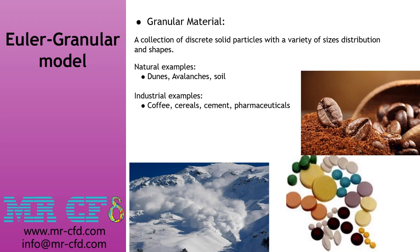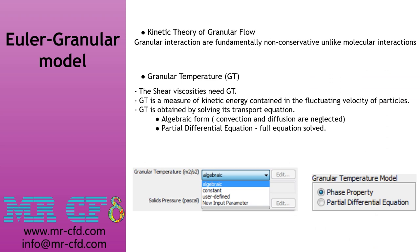Granular flows are among the most important mixture flows that can be simulated using the Eulerian model. Granular materials are collections of discrete solid particles with various sizes, distributions, and shapes — examples include natural phenomena like dunes and avalanches, and industrial applications like coffee, cereals, cement, and pharmaceuticals. The granular model, based on kinetic theory, cannot model solid mechanics, but can model packed beds and transitions between fluidized and packed beds. The granular temperature (GT) is a measure of kinetic energy in fluctuating particle velocities and is obtained by solving transport equations, with options for either the algebraic form (neglecting convection and diffusion) or the full partial differential equation.